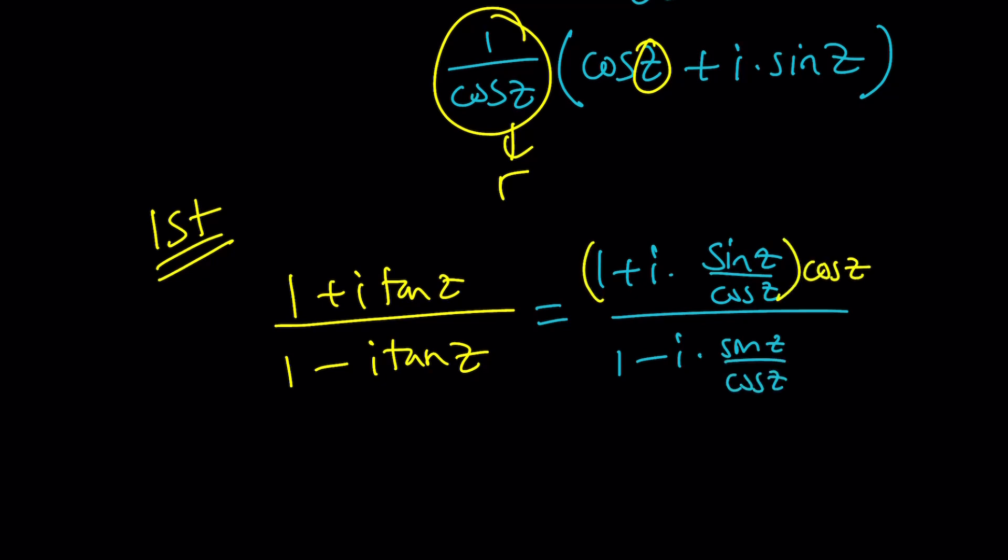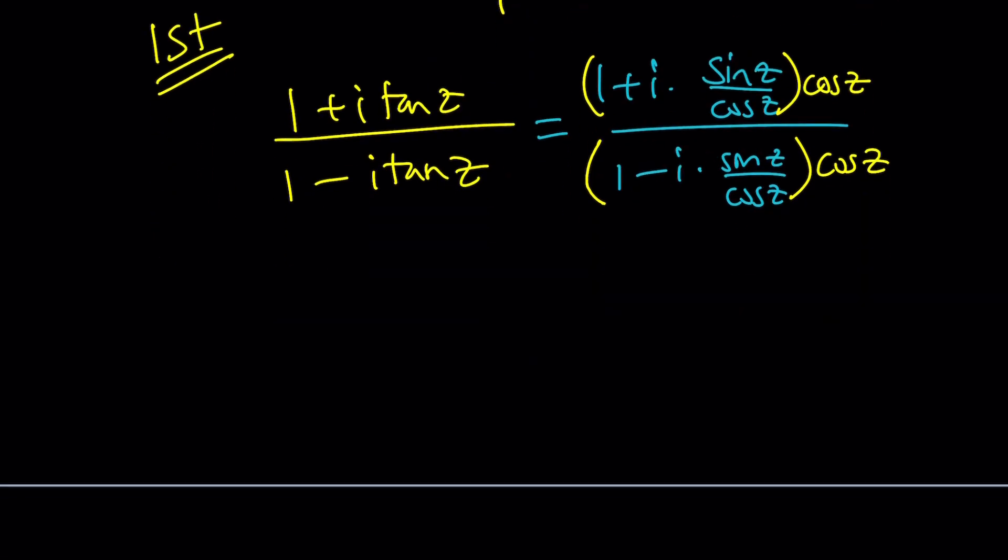And then, to eliminate the fraction, multiply the top and the bottom by cosine z, which is doable, as long as cosine z does not equal 0. You've got to be careful about that, because if cosine z is 0, then tangent is undefined. But when you distribute this, you're going to get cosine z plus i sine z divided by cosine z minus i sine z.